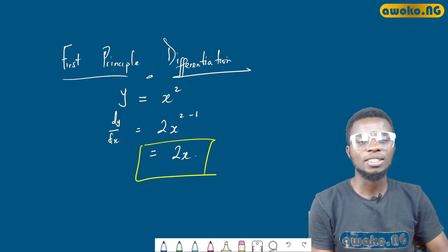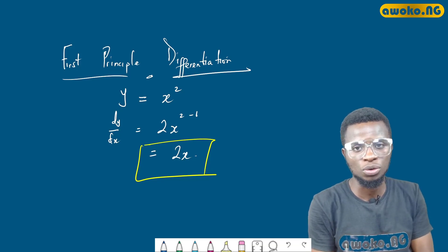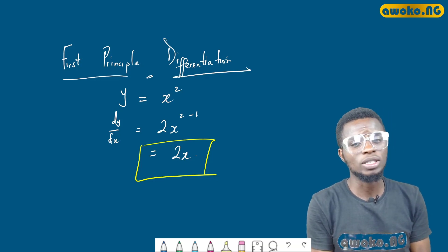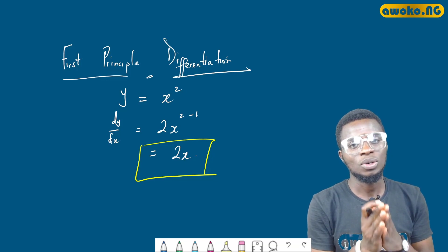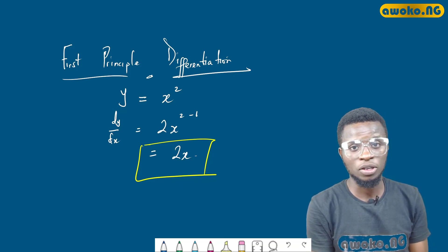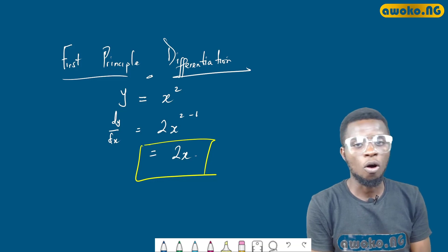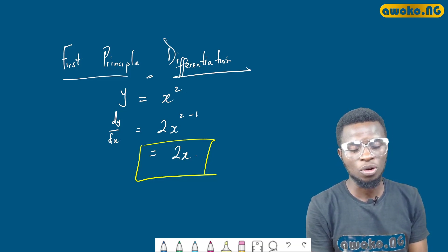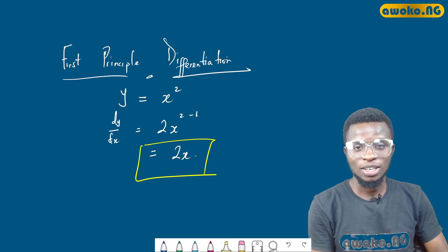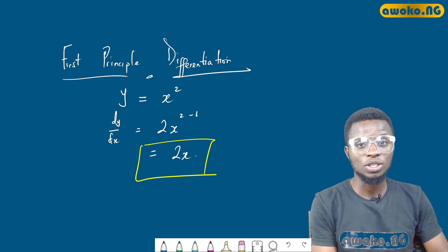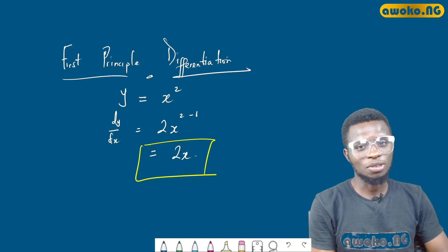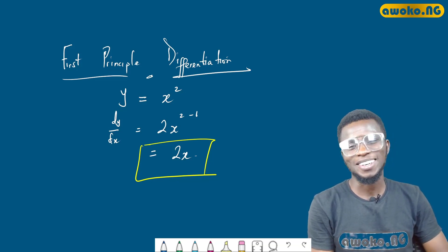Comparing this result to our formula method, we get the same answer — 2x — irrespective of which method you use. However, in most cases when you are not specified to use a particular method, it is advisable to use the formula method because it gives you the answer faster. This is where we end today's class; in our next class we will discuss more complex problems on differentiation using first principles. See you then!